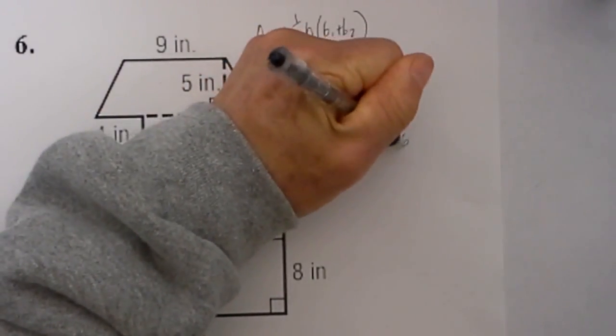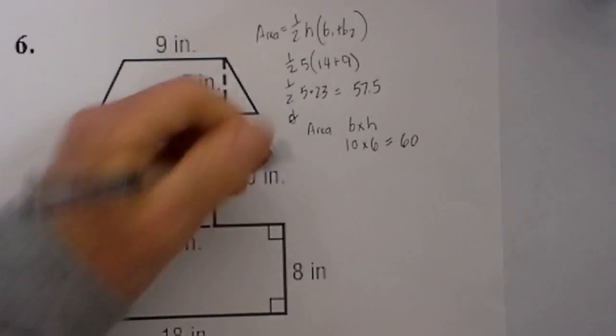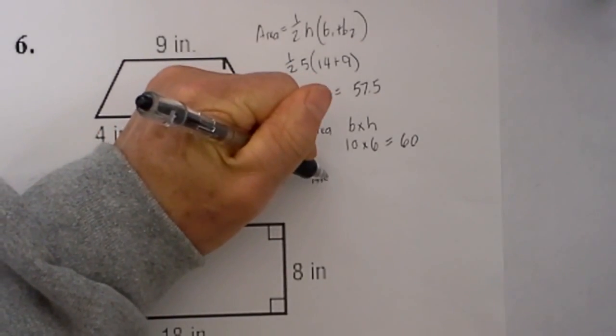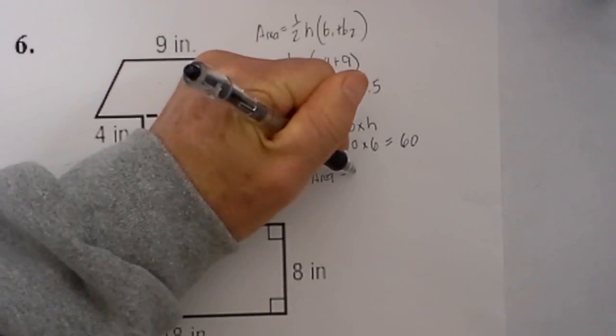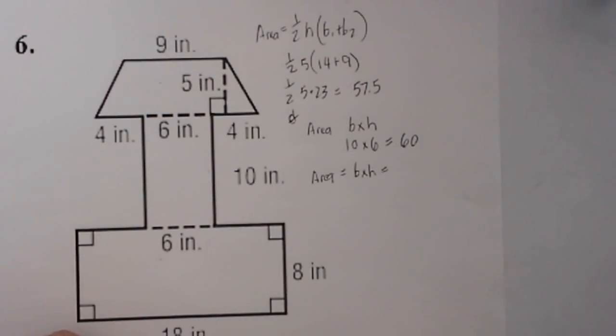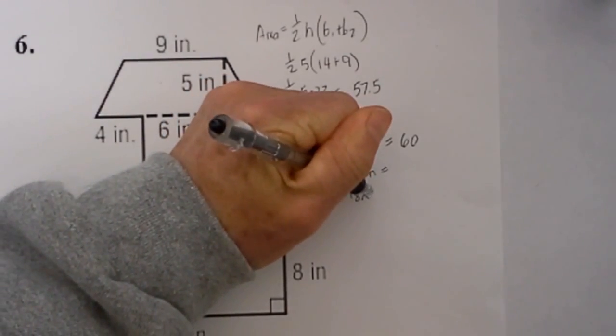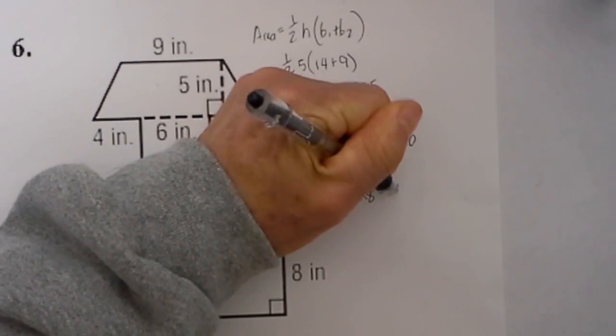And then finally we just have another rectangle here. The area of the rectangle will equal base times height, which is equal to 18 times 8, which is equal to 144.